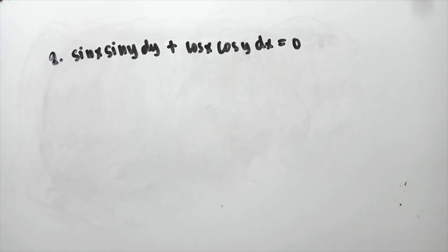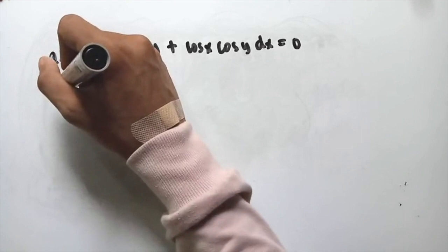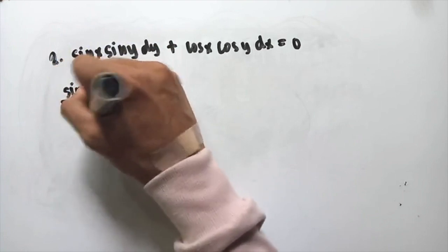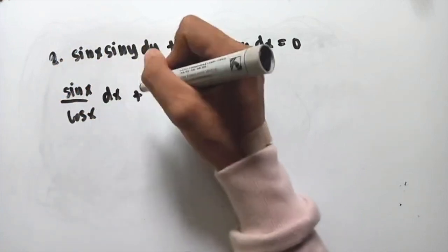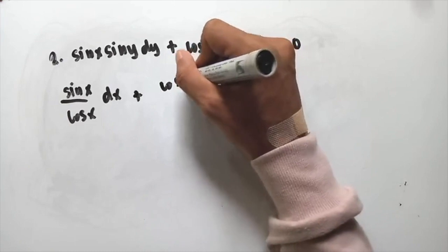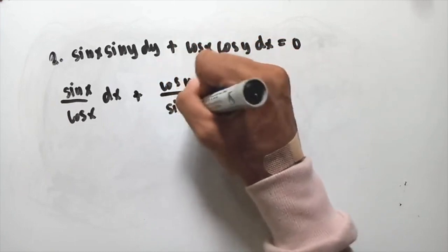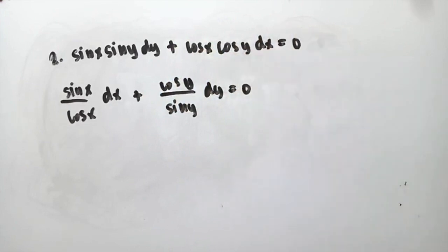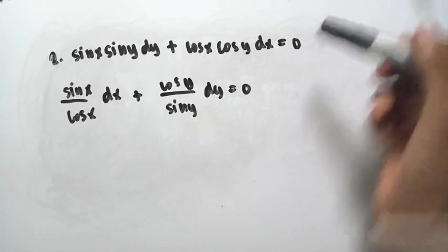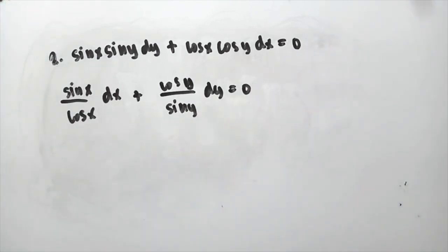Dividing both sides by sin y · cos x, this becomes sin x over cos x dx plus cos y over sin y dy equal to zero. The equation is now separated, so we can apply integration to both sides.